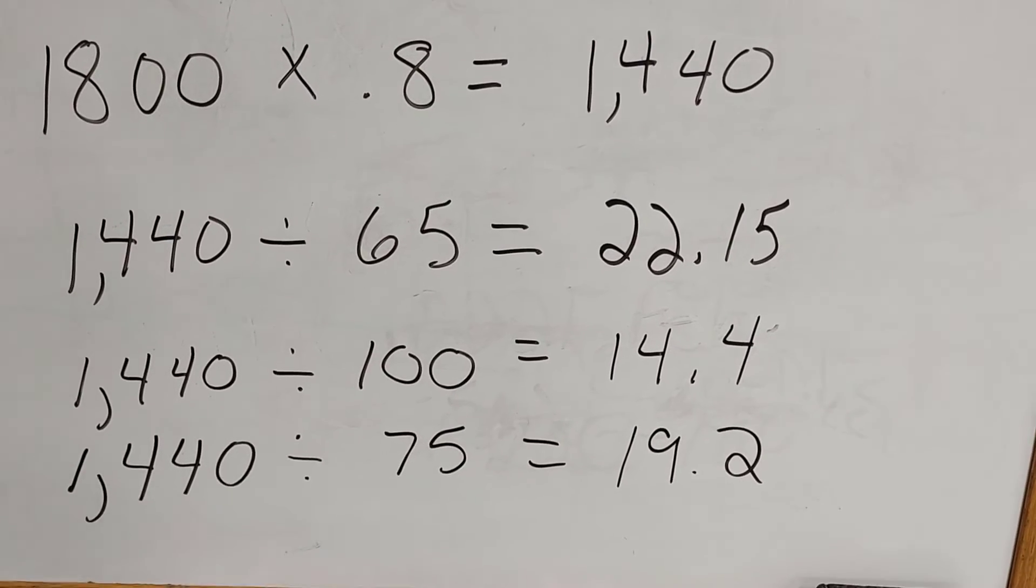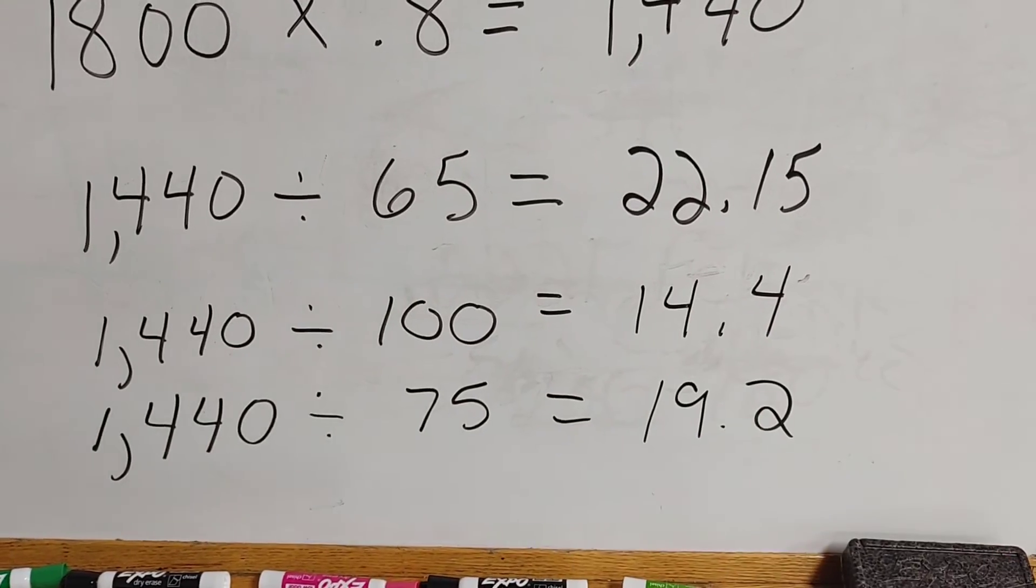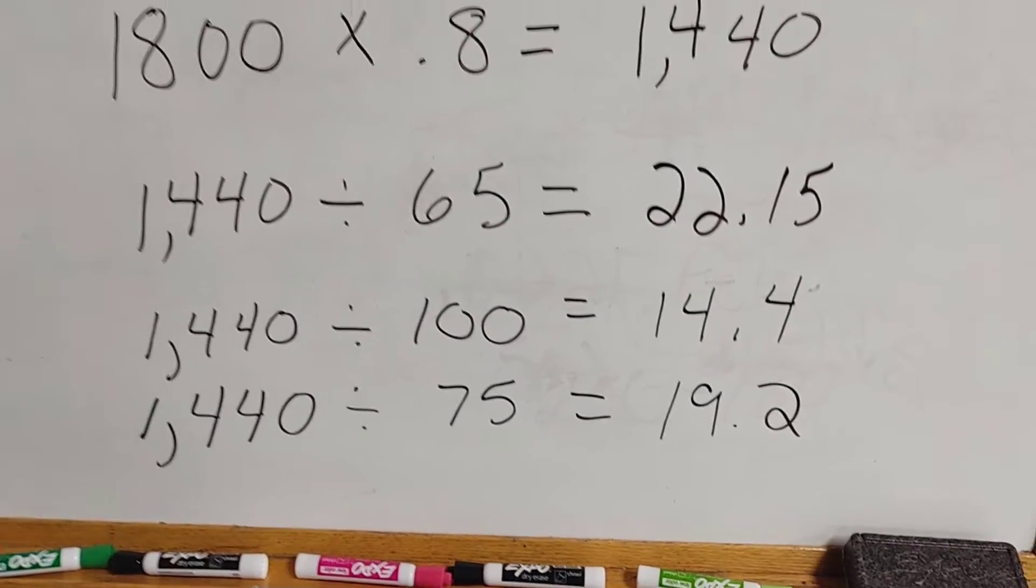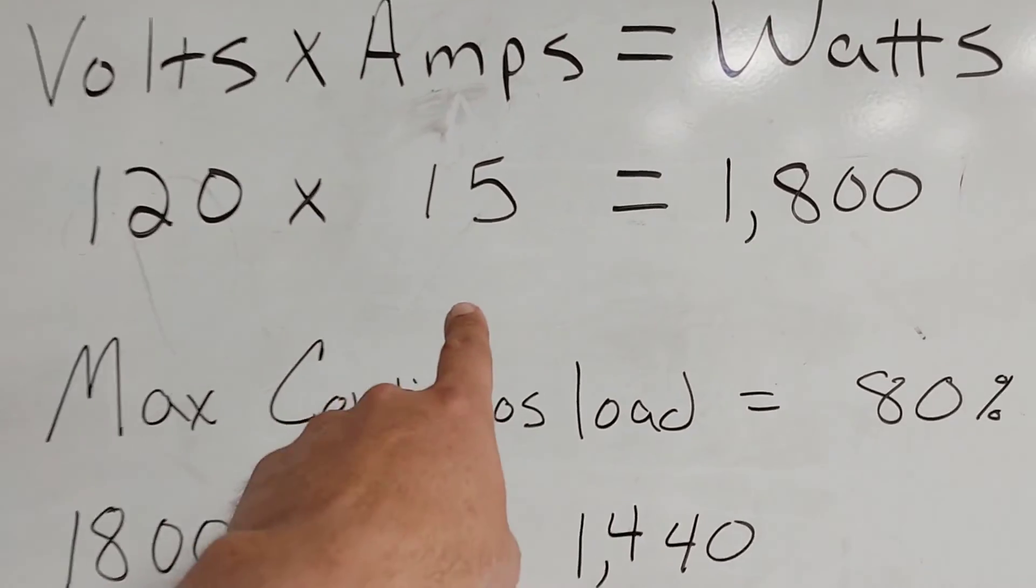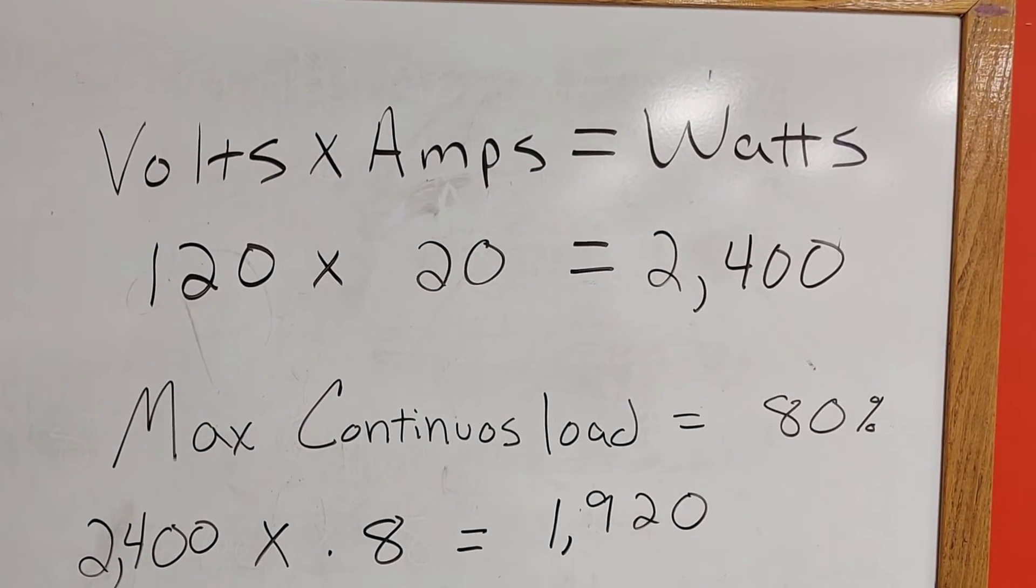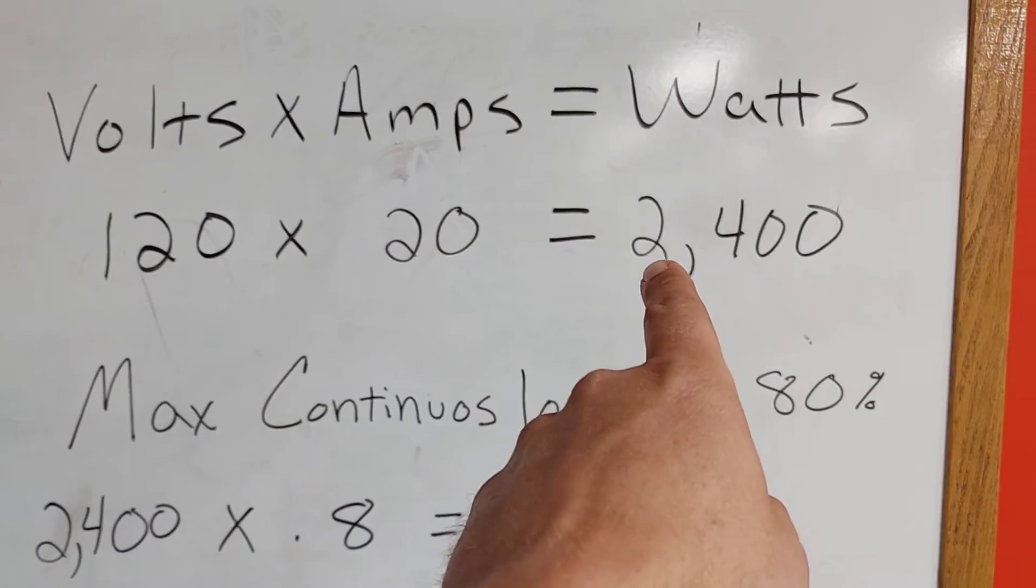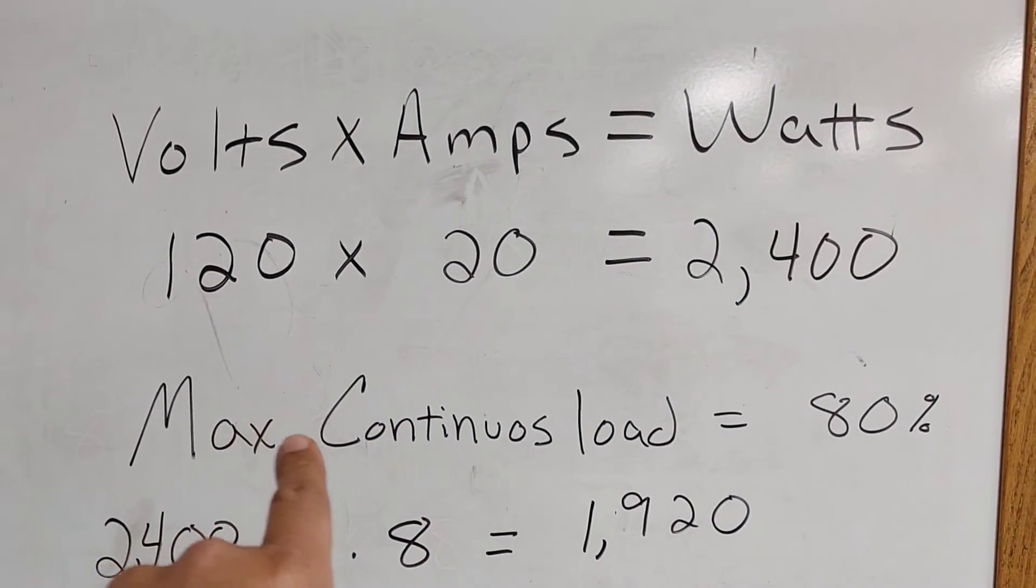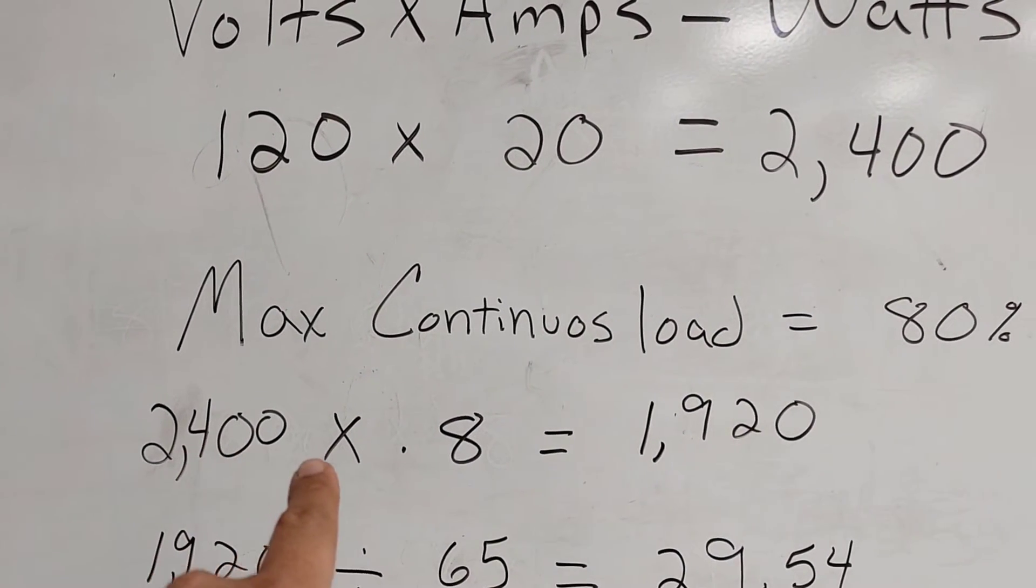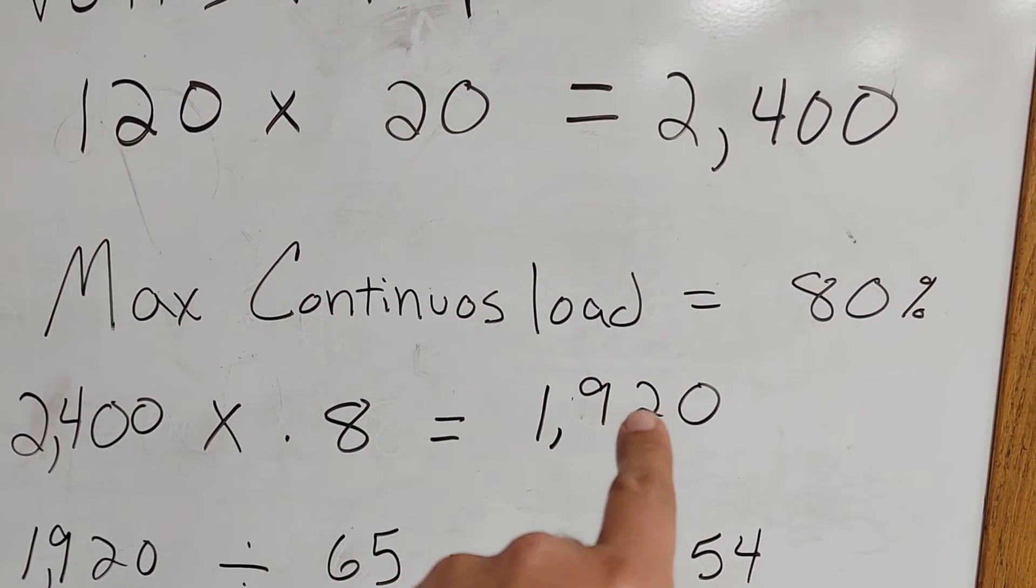Again, this is all being calculated for a 15 amp circuit. Now just to give you a quick breakdown if you were using a 20 amp circuit: 120 volts times 20 amps gives you 2,400 watts. But again, we have to apply the maximum continuous load of 80 percent. So we multiply 2,400 by 0.8, and that gives us 1,920 watts.